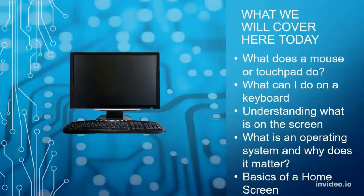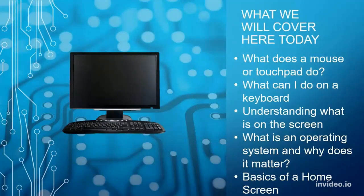So here's what we're going to cover today: what does a mouse or a touchpad do, what can I do on a keyboard, understanding what is on the screen, what is an operating system and why does it matter, and then the basics of the home screen, which is basically the front end of the computer.